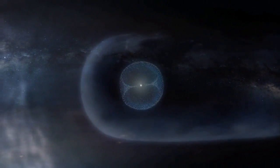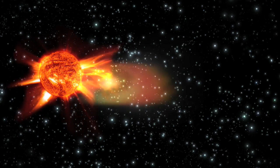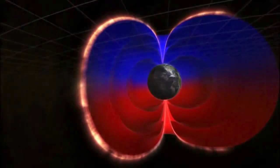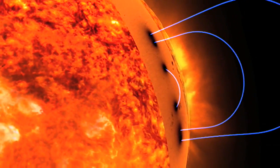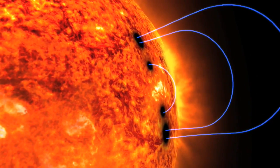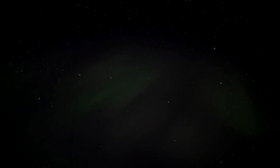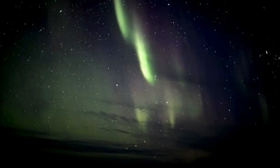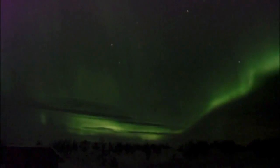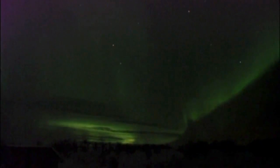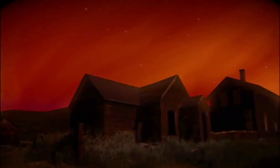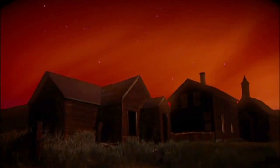Now we know that the strongest geomagnetic storms are caused by something that accompanies solar flares: coronal mass ejections, outbursts of plasma with embedded solar magnetic fields which interact with the Earth's magnetic field. Like sunspots, coronal mass ejections and solar coronal holes are related to the Sun's magnetic field. The most beautiful expression of a geomagnetic storm is the aurora, caused by the collision of energetic charged particles from the solar wind with atoms in the upper atmosphere. Aurora is observed at high northern and southern latitudes, but during very strong geomagnetic storms like the Carrington event it can be seen at latitudes as low as 30 degrees.